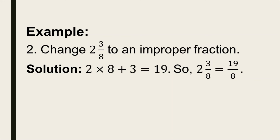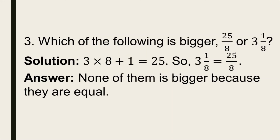For number three: which of the following is bigger — 25 over 8 or 3 and one-eighth? Let us change the mixed number to an improper fraction. 3 times 8 equals 24, plus 1 equals 25. So 3 and one-eighth equals 25 over 8. Therefore, none of them is bigger because they are simply equal.